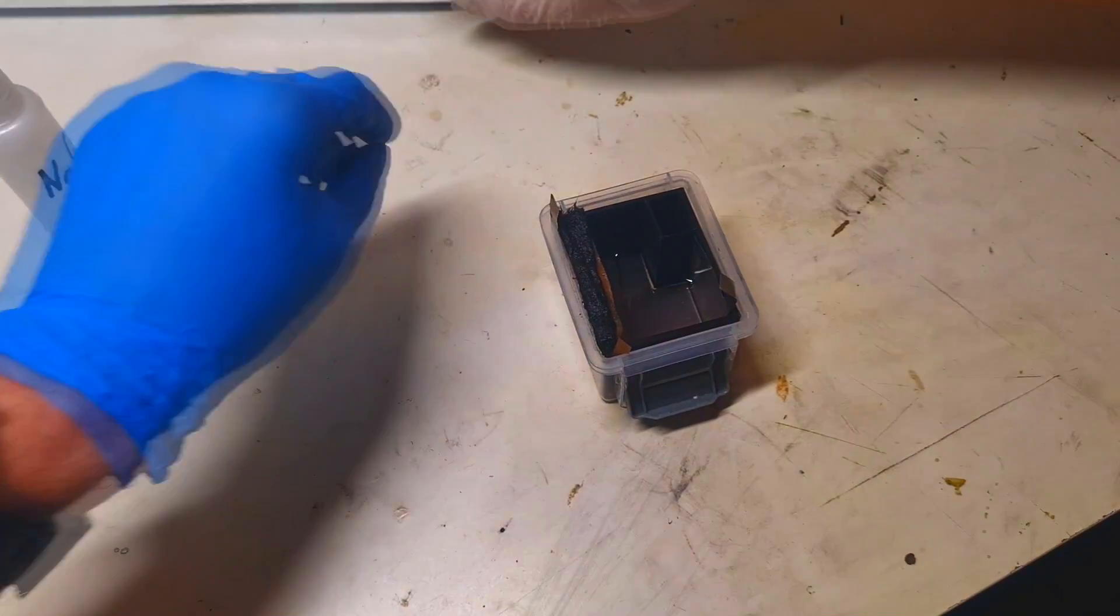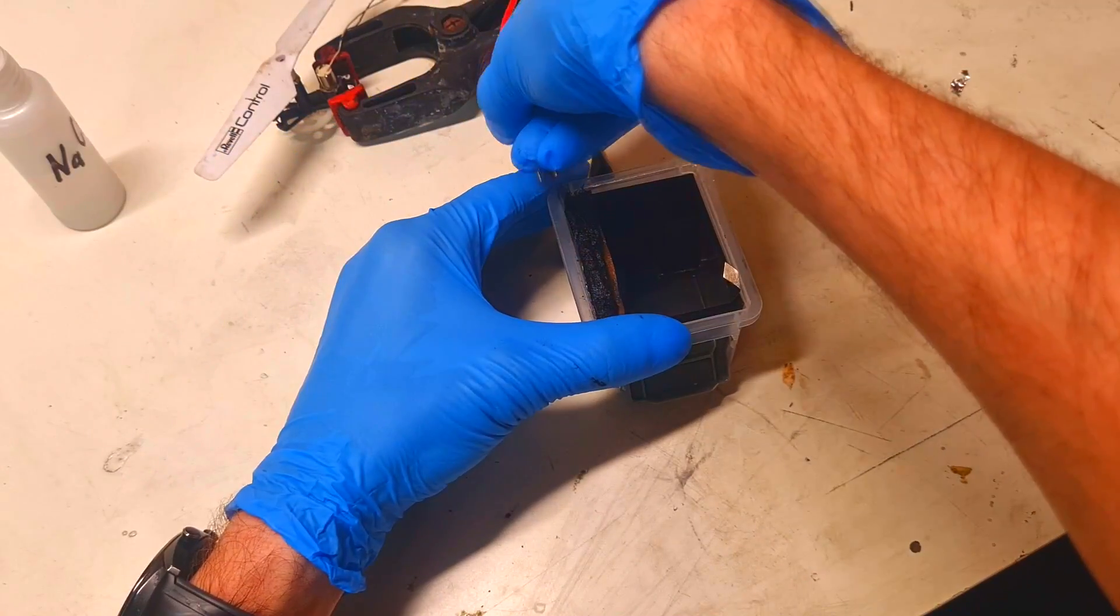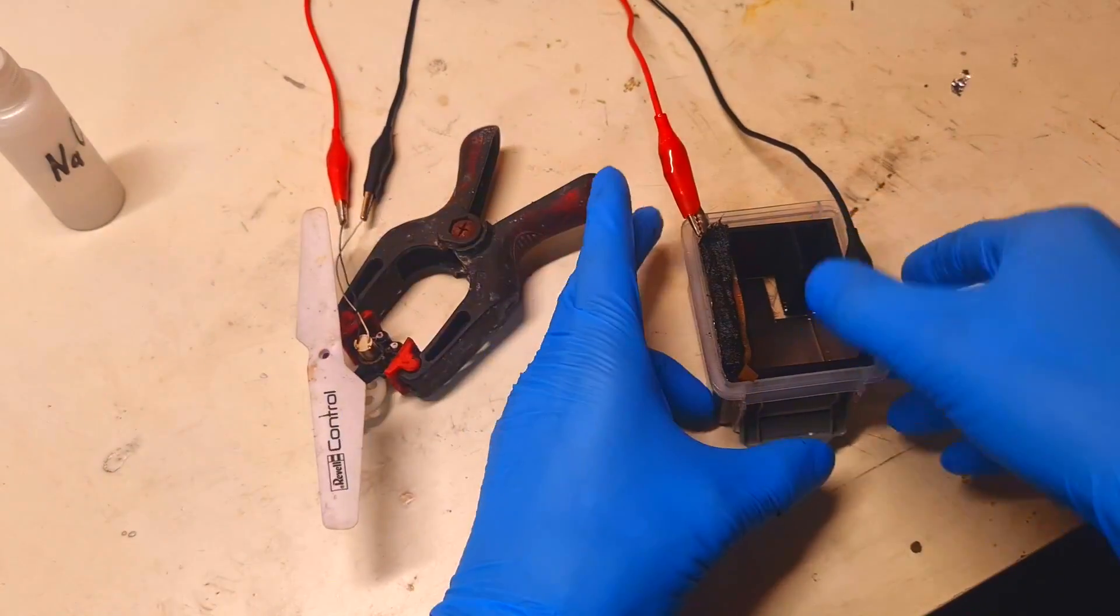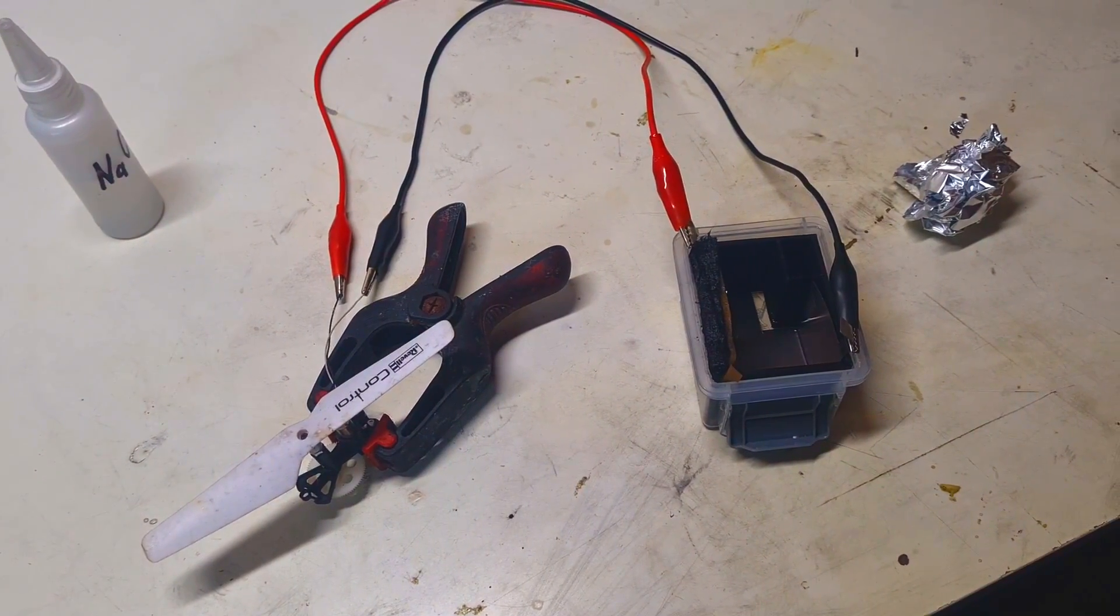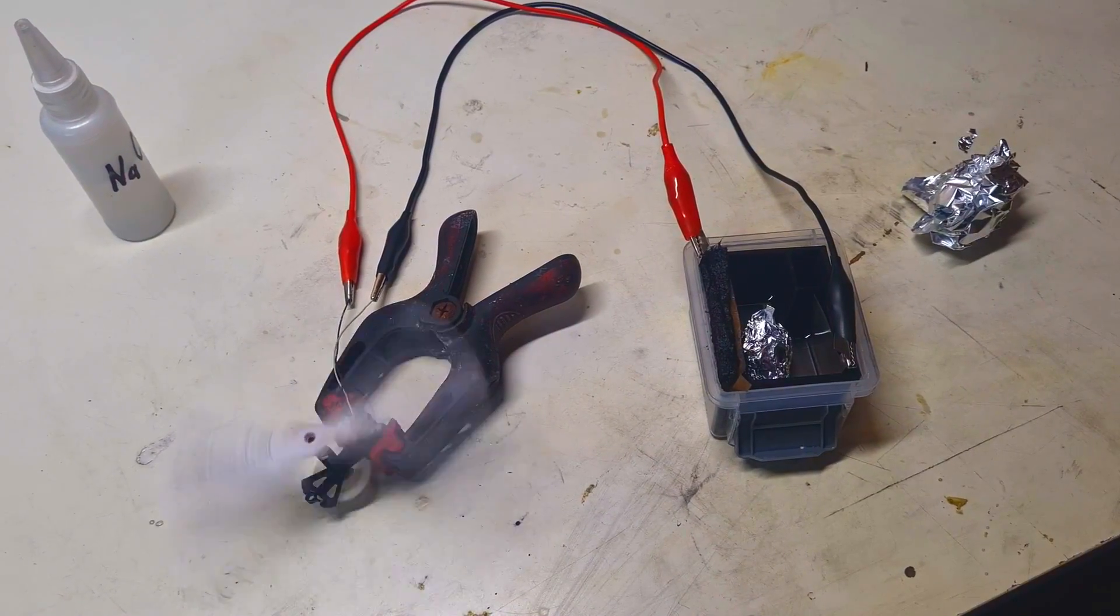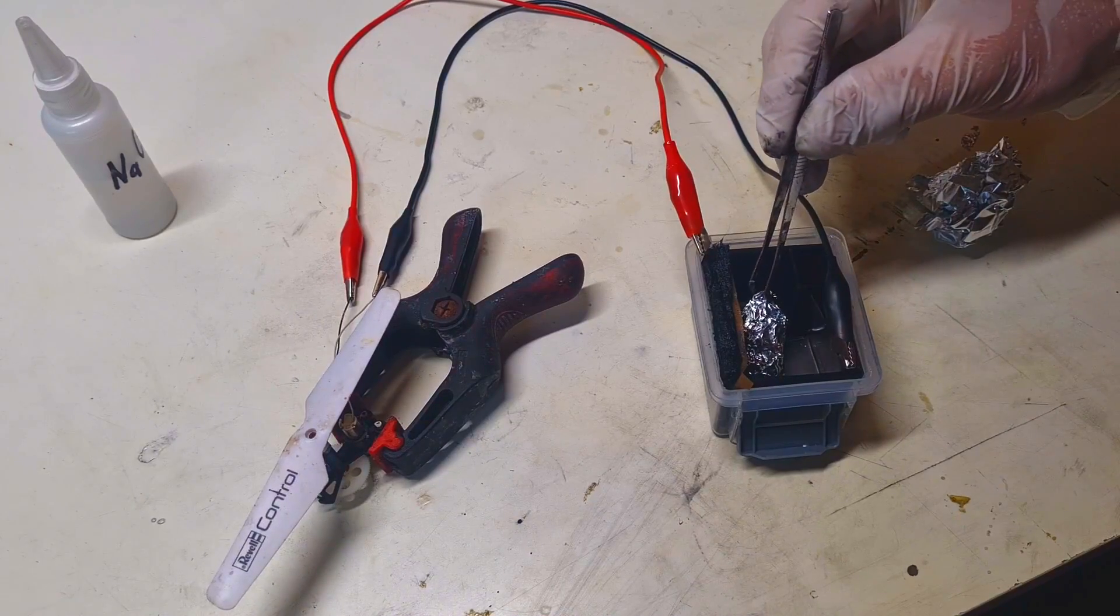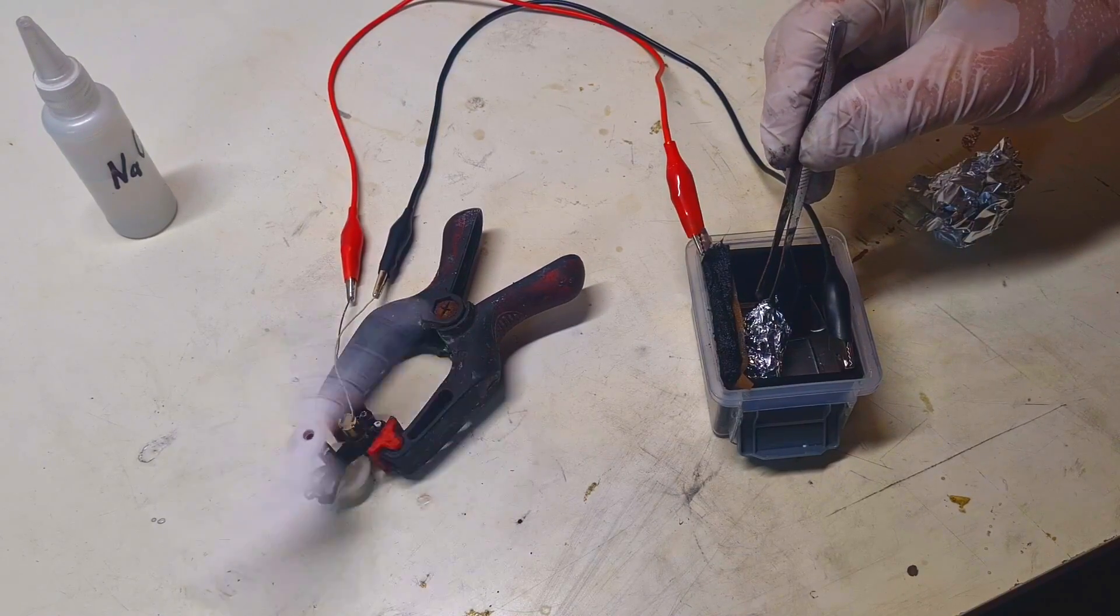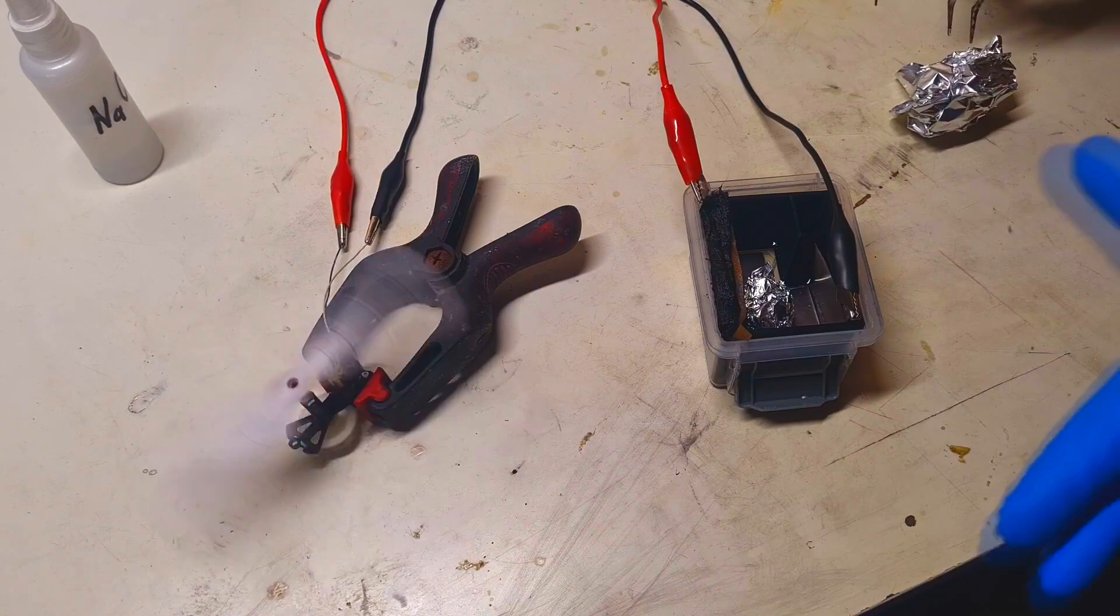Now we just need some fuel. But first, we will connect this motor. When the battery, or better to say the fuel cell, is discharged, then in this case you just add some fresh aluminum.